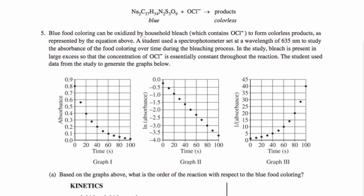Blue food coloring can be oxidized by household bleach, which contains hypochlorite ion, or OCl minus, to form colorless products, as represented by the equation above. So we have this equation where we have blue food coloring, which has this chemical formula, and it's reacting with bleach or hypochlorite, and it's making colorless products. So we're getting this color change from blue to colorless.